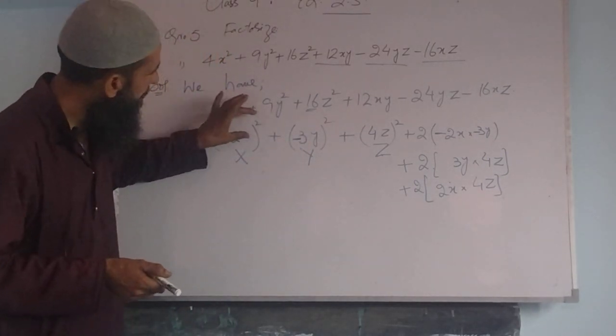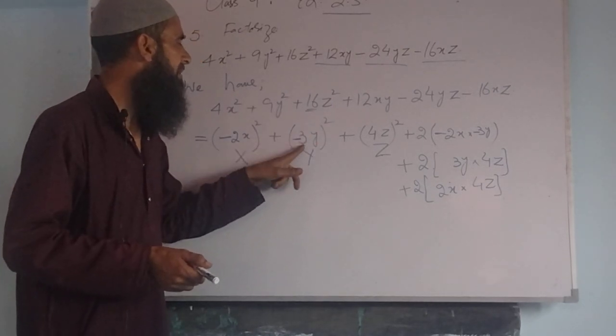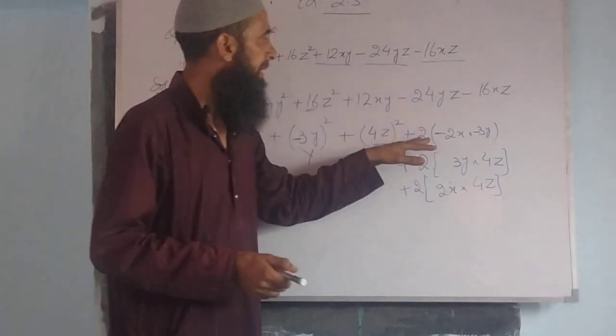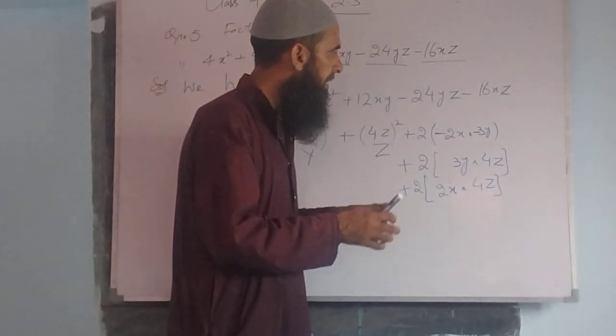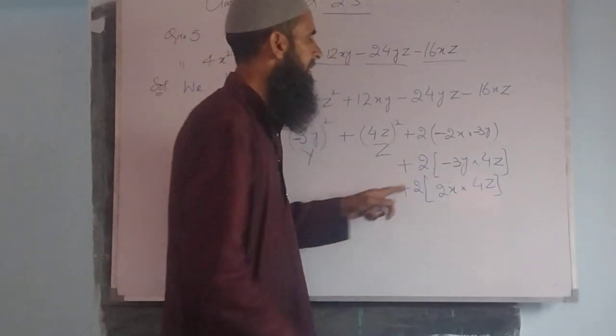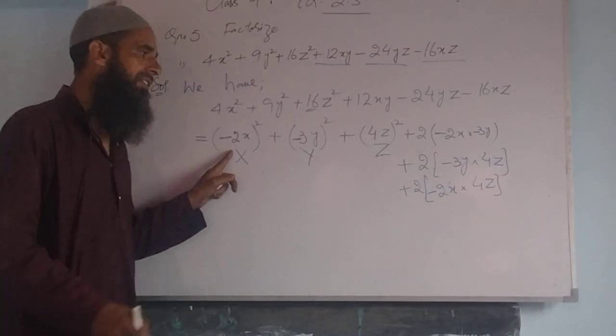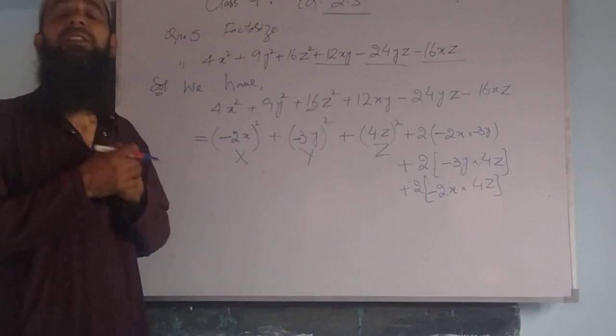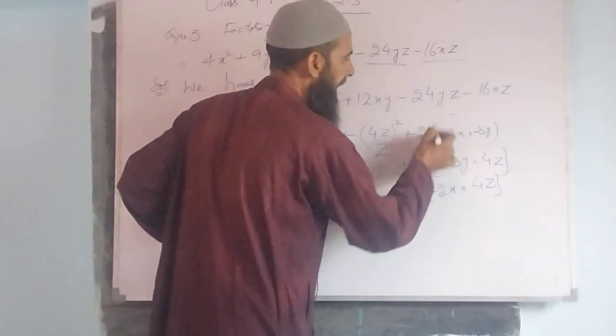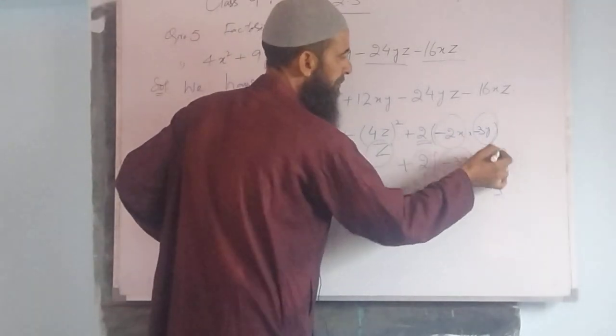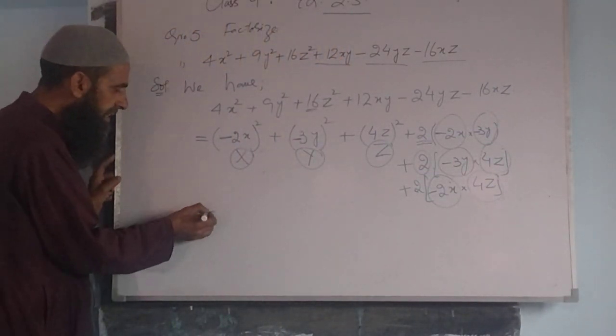Now see here students, we get 2x² that is 4x², minus becomes plus, that is 4x². Plus 3y square is 9y², plus 16z², 2 into minus 2 into minus 3, minus minus plus it becomes 12xy. 2 into minus 3 is minus 6 into 4 is minus 24. This is the well-known identity: x² + y² + z² + 2xy + 2yz + 2xz.